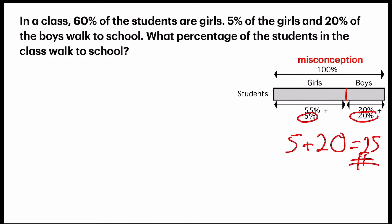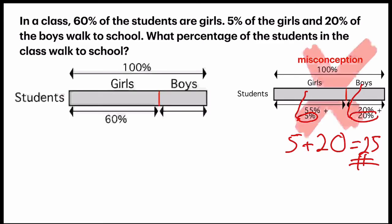That is wrong. They simply took the 5% from the girls and 20% from the boys instead of finding part of a part. So what do I mean by part of a part? Let's take a look.